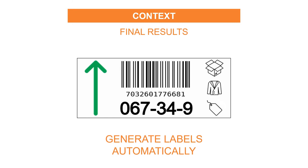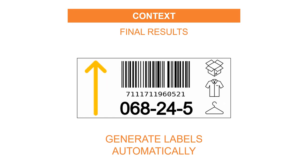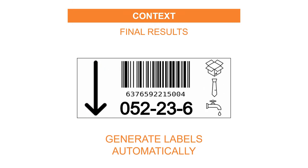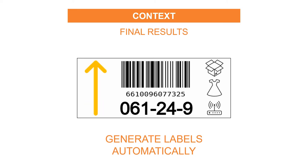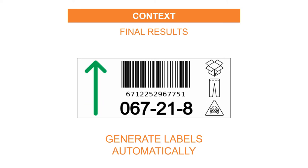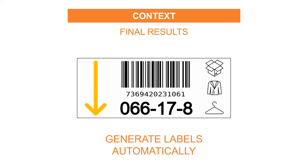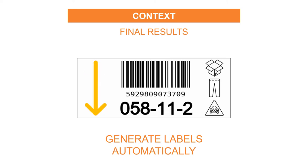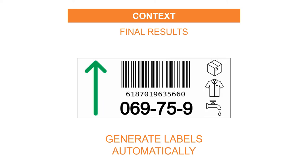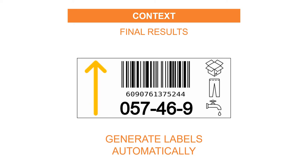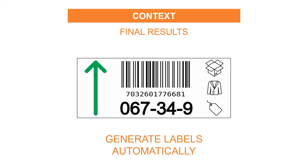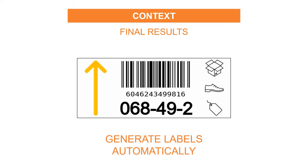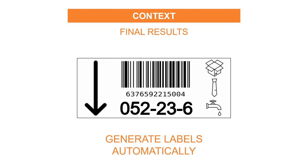The final result will look like this: a set of labels with key information like location number, barcode that can be read by RF guns, and additional information like product type, dangerous goods, or preparation methods — do you need to take the item by pieces or by full cartons? The idea is to design a Python script that will take the information from an Excel file and automatically generate these labels.